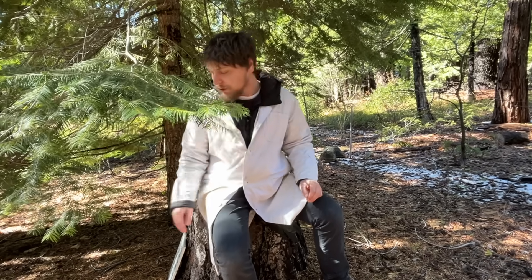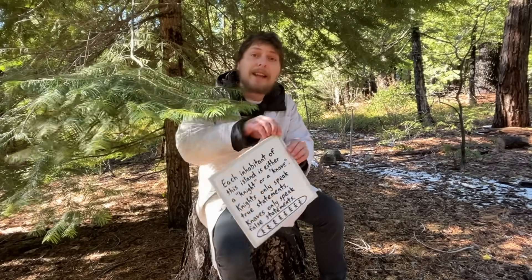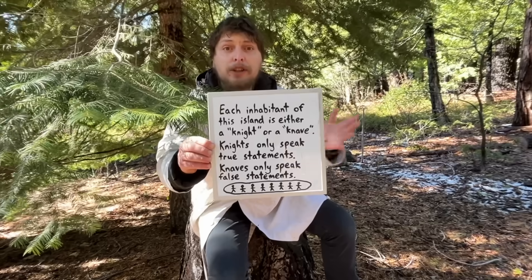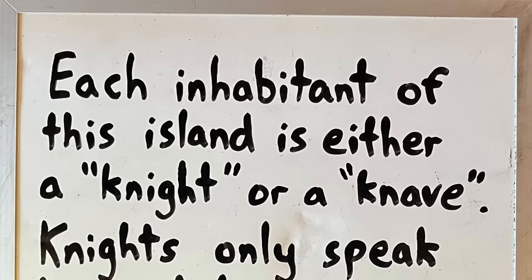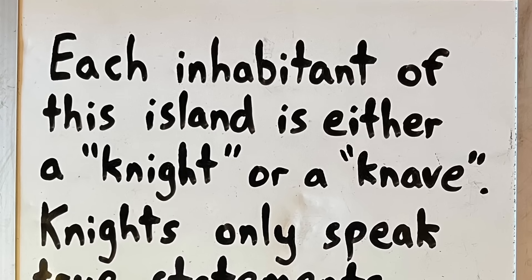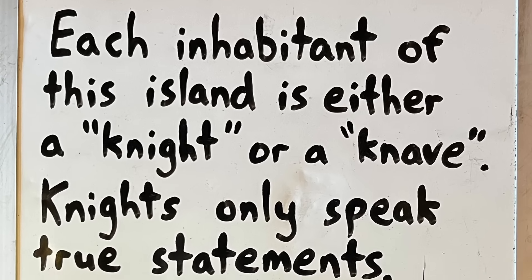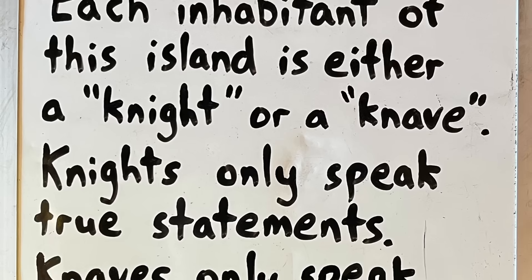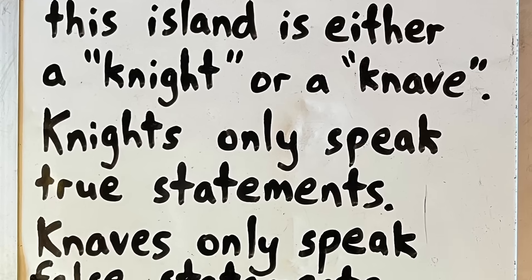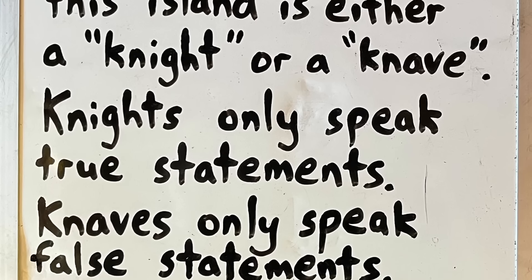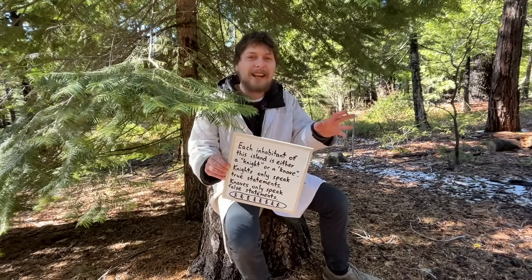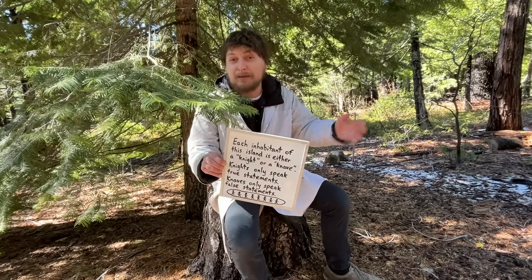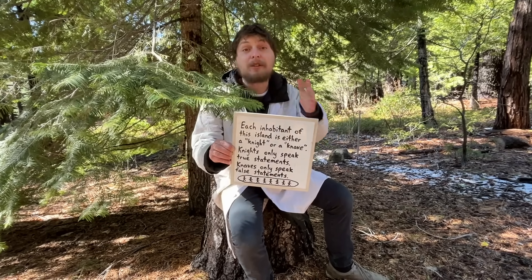This sort of logic puzzle is known as knight and knave puzzles, a term coined by the logician Raymond Smullyan, one of my favorite authors. In this sort of puzzle, imagine visiting an island where every inhabitant is either a knight or a knave. The knights only speak statements that are true, while the knaves only speak statements that are false — regardless of whether they're getting something wrong or trying to trick us by lying.